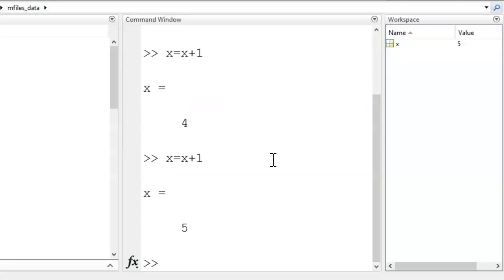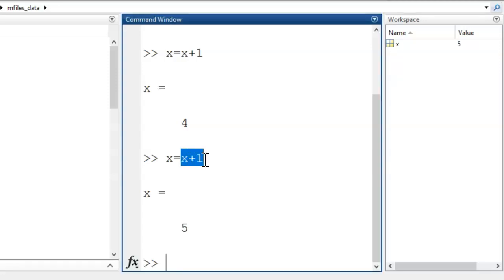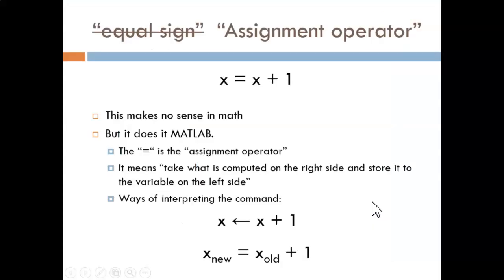So how is MATLAB interpreting it? The assignment operator means that we first do our computations on the right side and then afterward we store the result to the variable on the left. You will typically see the equal sign written in pseudocode as an arrow pointing to the left. The former x value will be overwritten by the new x value.